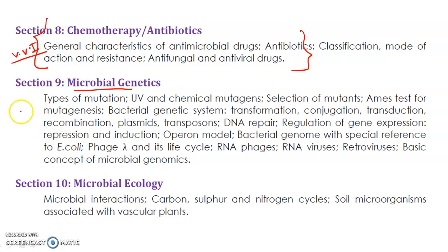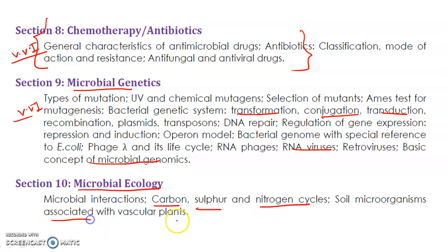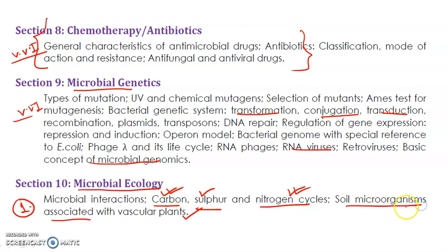In microbial genetics, study transduction, transformation, and conjugation, RNA viruses, and the concept of microbial genomics. Microbial ecology is also important — study the carbon, sulfur, and nitrogen cycles. Know examples of denitrifying bacteria, nitrifying bacteria, and nitrogen-fixing bacteria. Biological nitrogen fixation may also come, including the enzymes dinitrogenase reductase and nitrogenase. The carbon and sulfur cycles and soil microorganisms are also important for the exam.